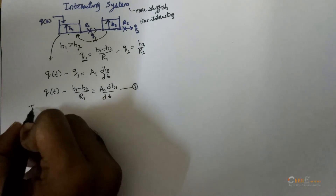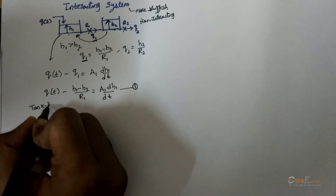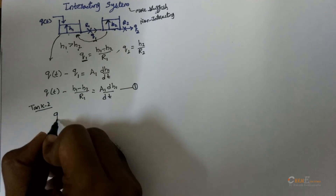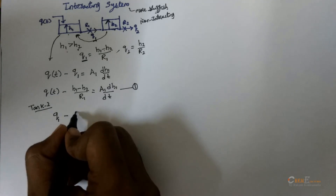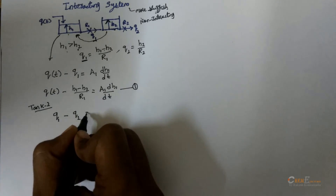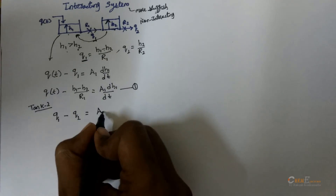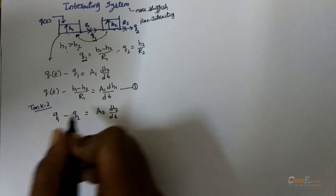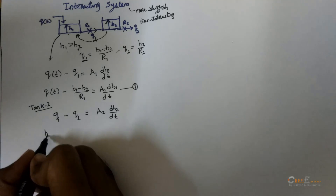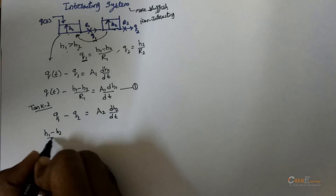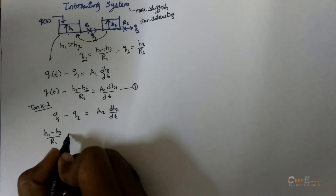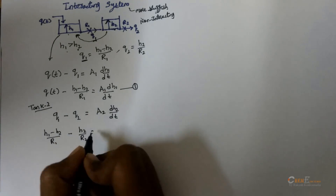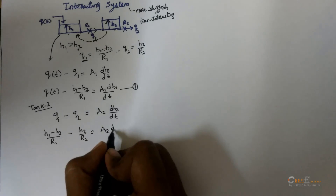Now consider tank 2 and write the material balance. Inlet flow rate Q1 minus outlet Q2 is equal to accumulation A2 · dH2/dt. Substituting: (H1 - H2) / R1 minus H2 / R2 equals A2 · dH2/dt.